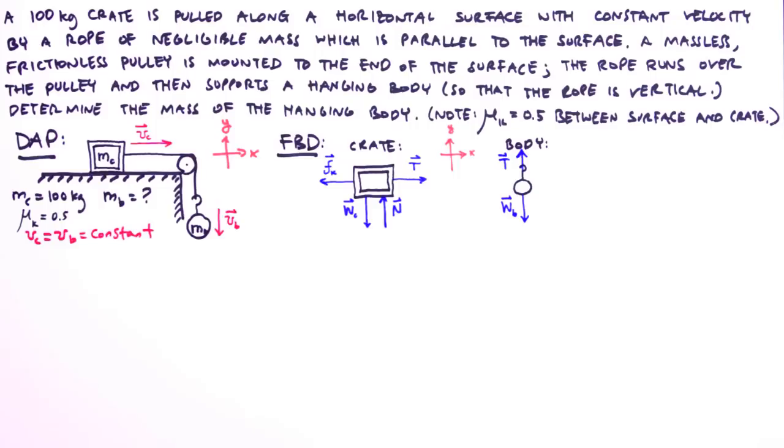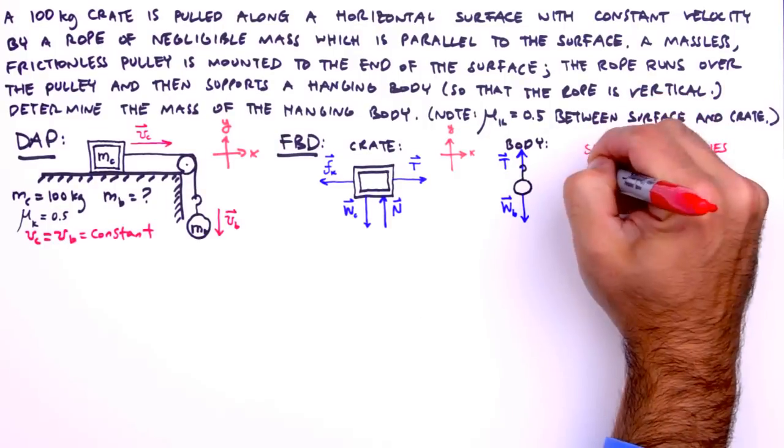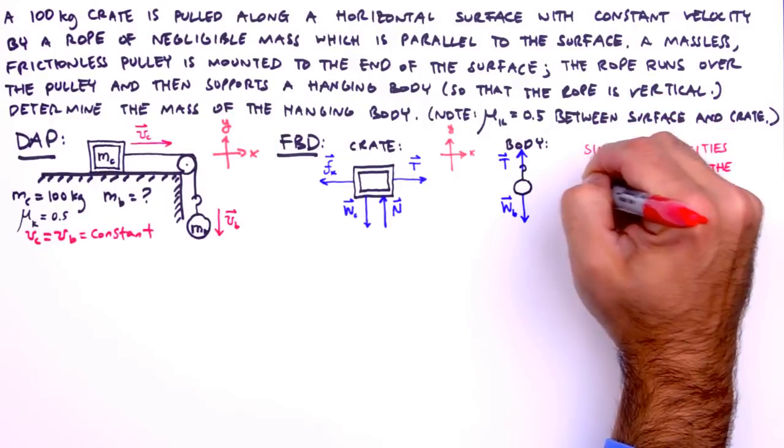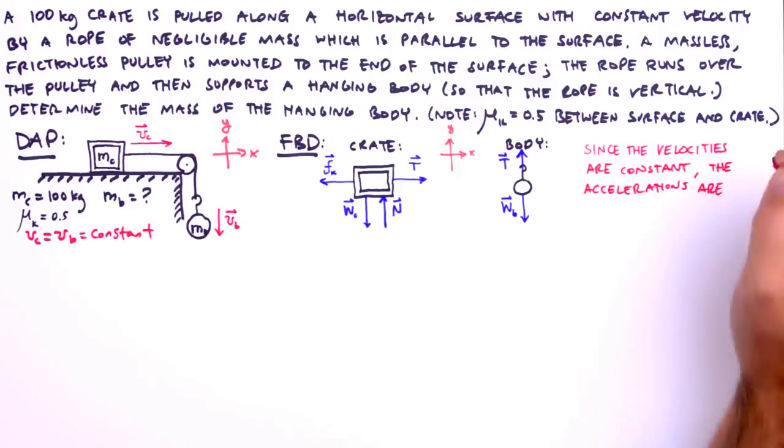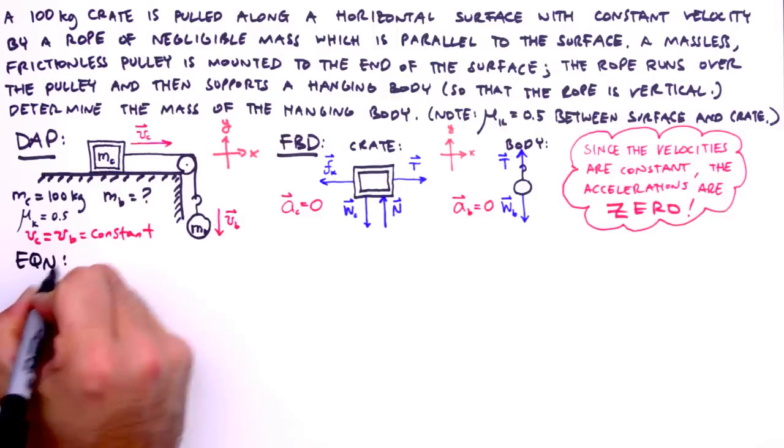So we can use the same notation for both tensions. Now, normally we indicate somewhere on our free body diagrams the direction of the acceleration of the body, or bodies in question. But since the velocities of both crate and hanging body are constant, their accelerations are zero. This implication is very important to us. So, a sub c equals zero, and a sub b equals zero. Good. Now we're ready to use equations to analyze the motions in our problem.